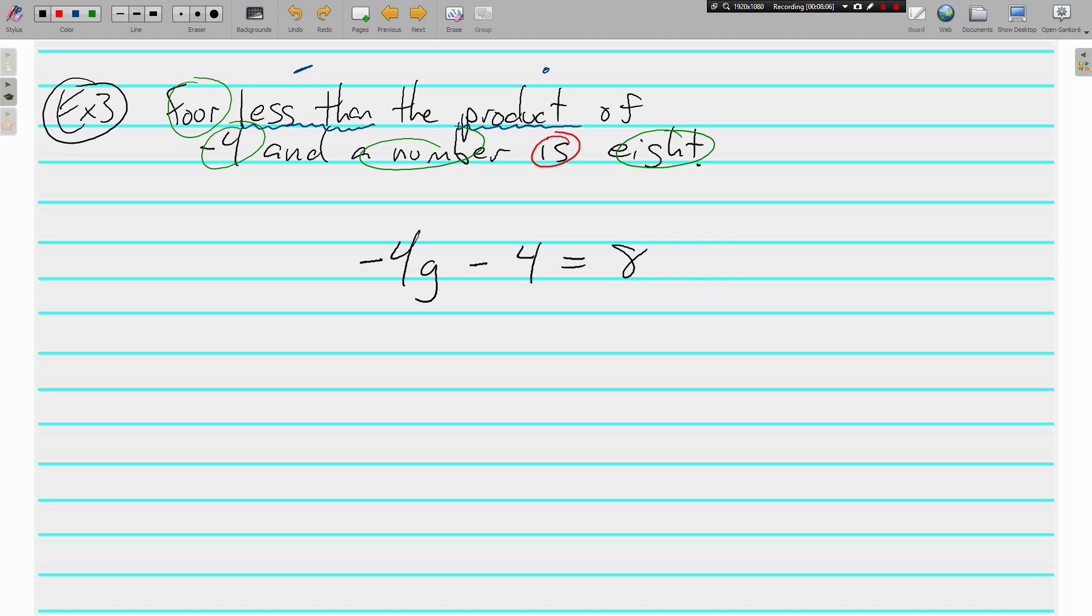But we know how to solve. Save the term with the variable for last. We're going to add four to both sides. And we get negative 4g is equal to twelve. And we are multiplying by negative four. So we're going to divide by a negative four. What you do to one side, you must do to the other. g is equal to negative three.